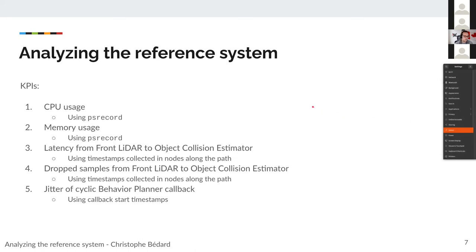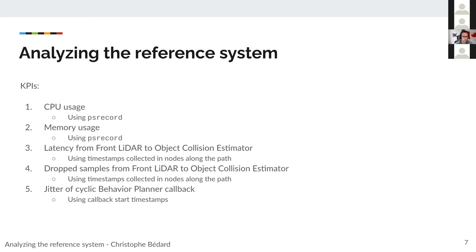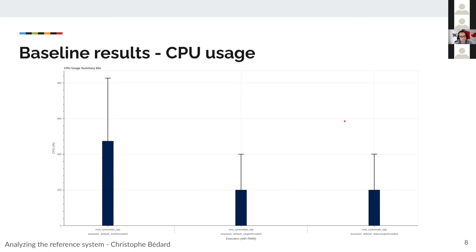Now let's talk about analyzing the reference system that Evan showed. For CPU usage and memory usage, we simply use the 'ps record' tool, which uses samples to compute simple CPU and memory usage. For latency, we use timestamps collected in nodes along the path — same timestamps for graph samples — and using those we can compute latency and the number of samples. For the jitter of the behavior planner callback, we use the callback timestamps from the tracing data.